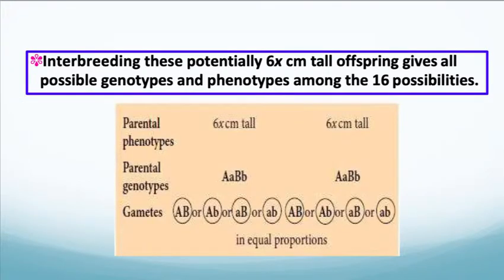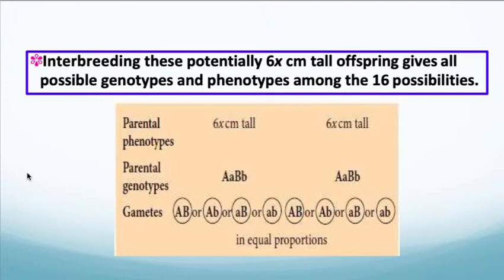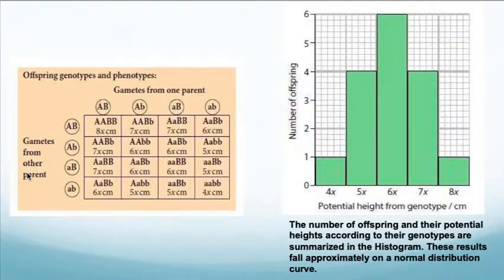Interbreeding these potentially 6x centimeters tall offspring gives all possible genotypes and phenotypes among the 16 possibilities. Looking at the parental genotypes, there are many possibilities all in equal proportions — this is why siblings could have a range of heights even though they came from parents of the same height. The number of offspring and their potential heights are summarized in a histogram, and these results fall approximately on a normal distribution curve. When you see a bell curve, you know it's continuous variation.